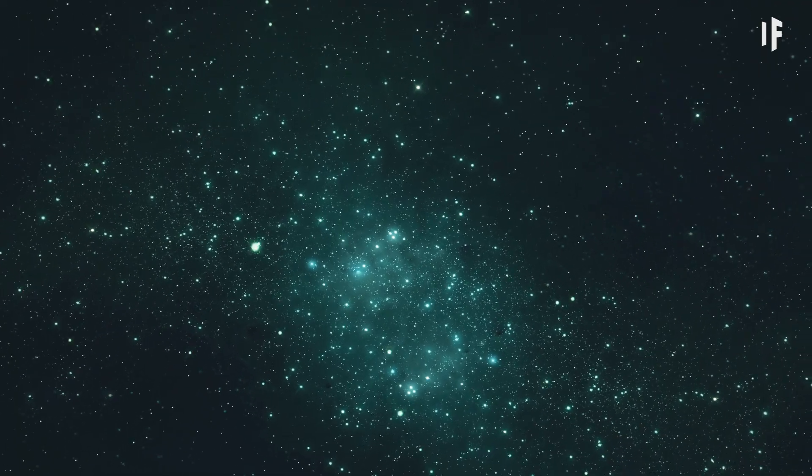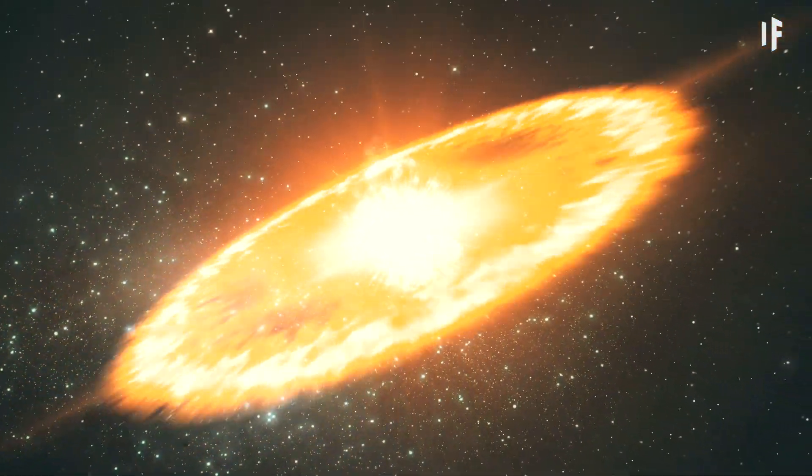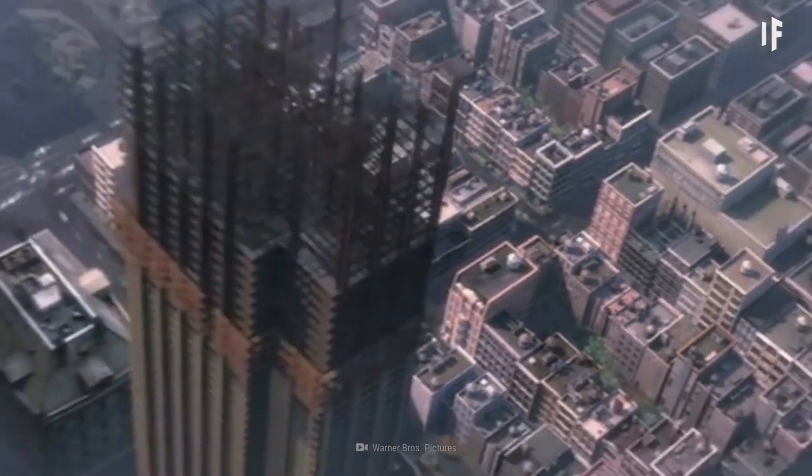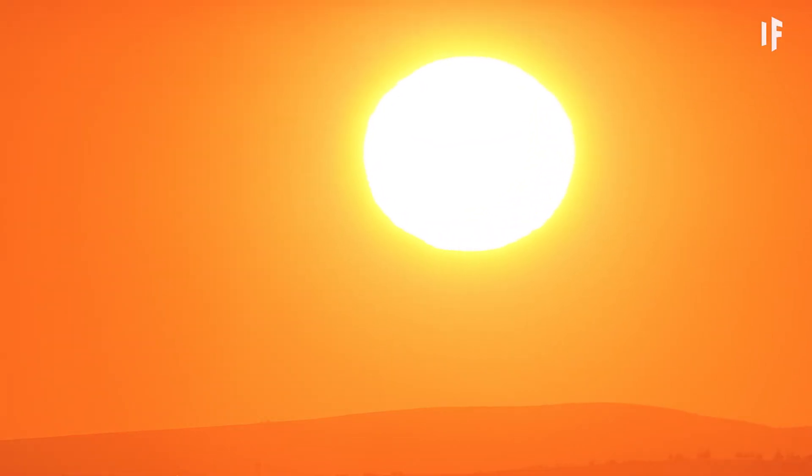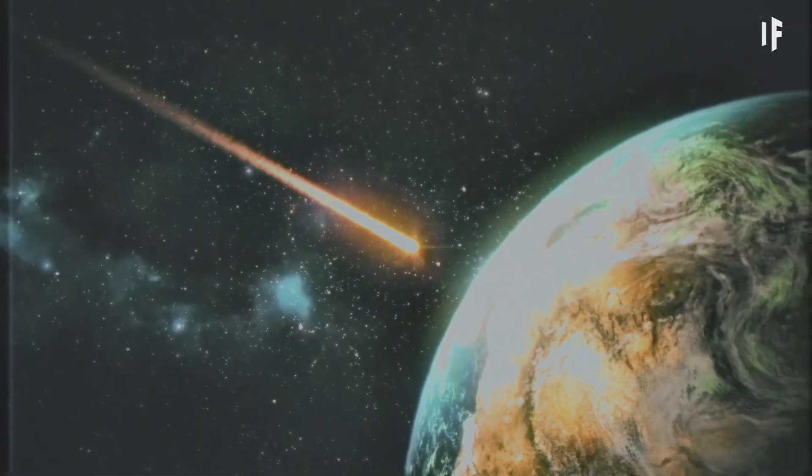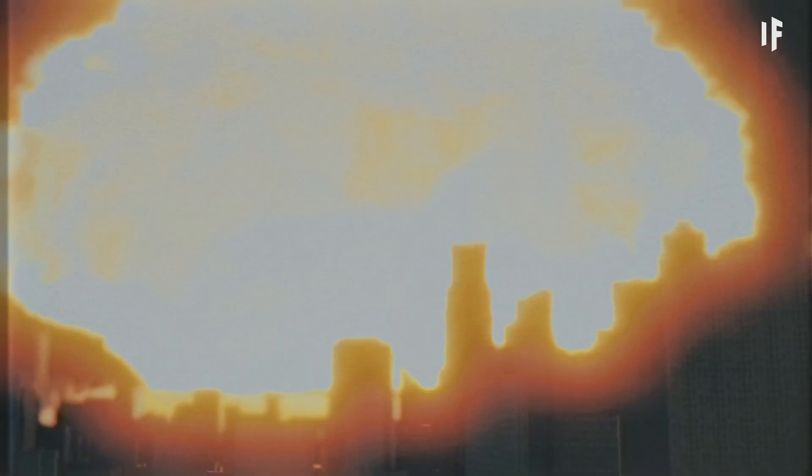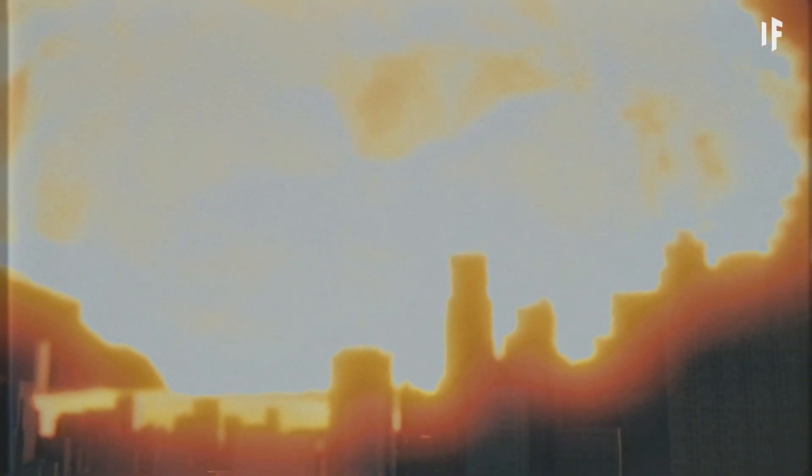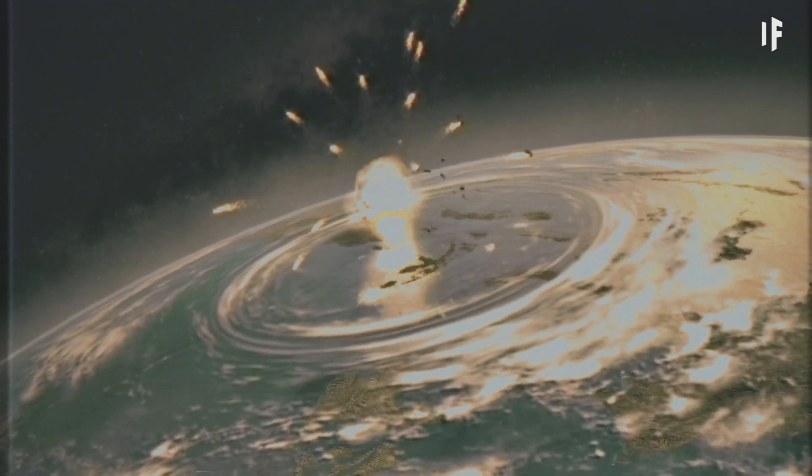But could this sort of doomsday scenario actually occur? Well, yes, but not for another 3 or 4 billion years. At that point, the Sun will be flickering out, and by that time, we're pretty sure something else we've covered on What If would have taken us out first, so we won't even be around to see it.